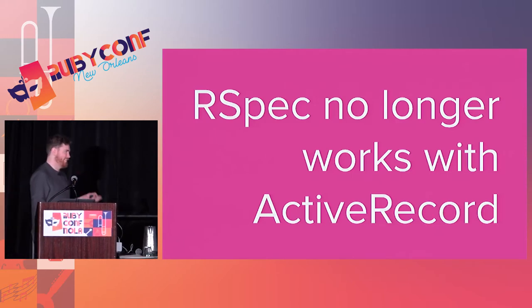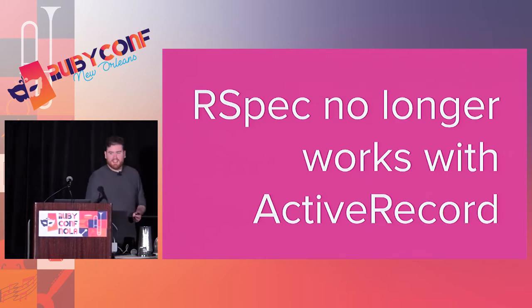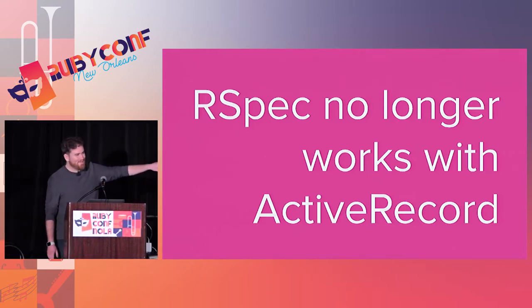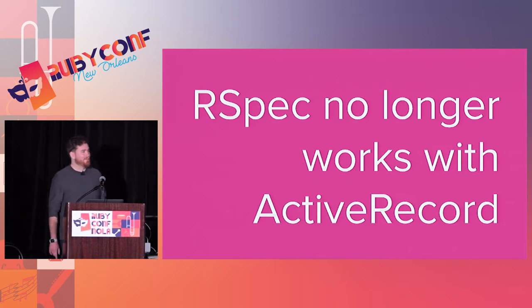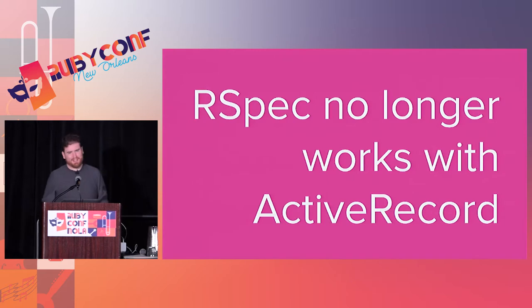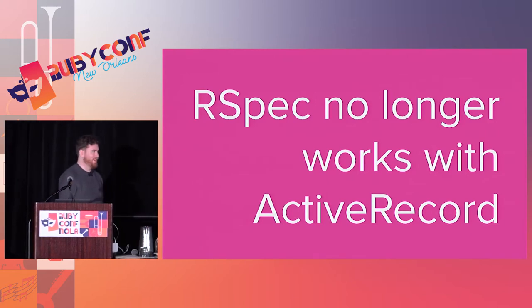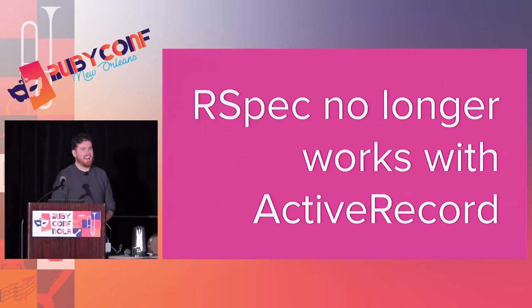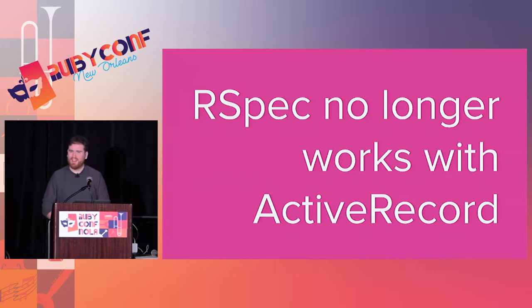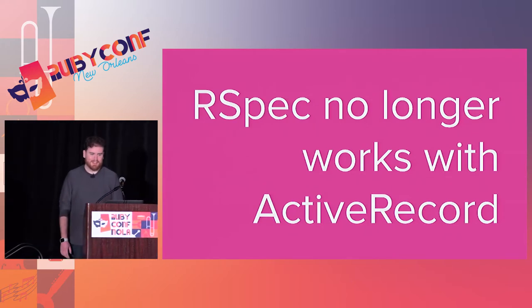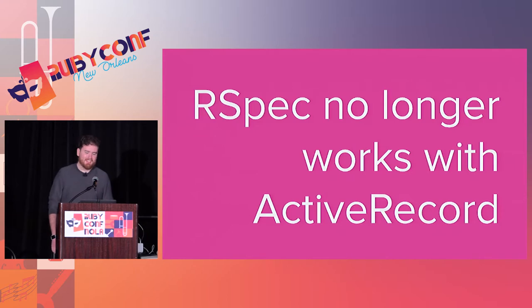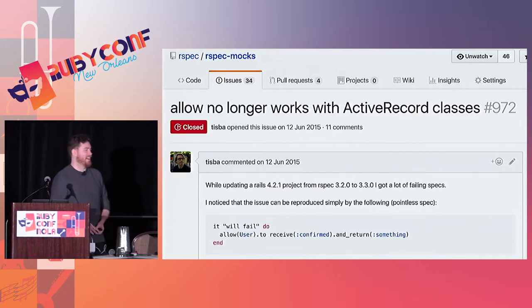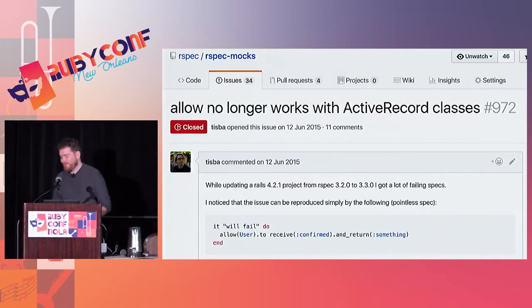So this is 'RSpec no longer works with ActiveRecord.' My name is Sam Phippen. Just to be absolutely 100% clear, this is not a feature announcement. Sometimes when you wake up in the morning, working through your email, drinking that first cup of coffee, a subject line comes in that fills your heart with such dread and terror that everything else stops, and you must immediately focus on it. For me, that was RSpec mocks issue number 972: 'allow no longer works with ActiveRecord classes.'